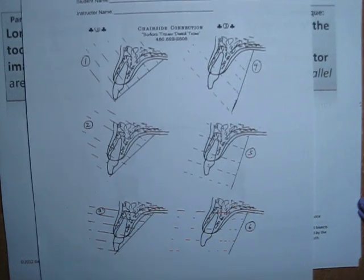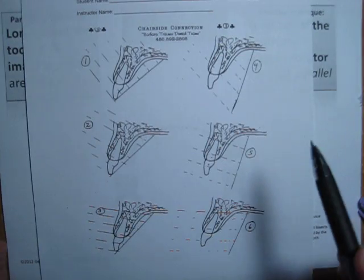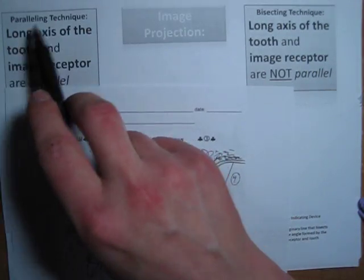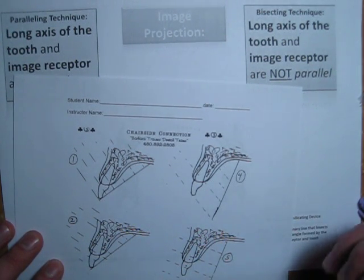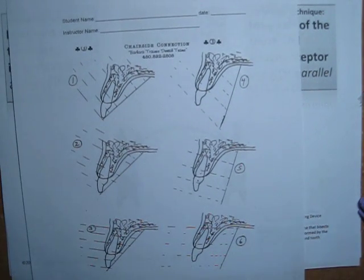Here we could approach this a couple ways. Maybe the easiest, most systematic way is to think about the fact that we have the paralleling technique and the bisecting technique. In this assignment you're asked to identify the image which would be an accurate bisecting technique, an accurate paralleling technique, and then which ones would be elongated or foreshortened in either a foreshortened bisecting technique or a foreshortened paralleling technique, and same for elongated paralleling or elongated bisecting.